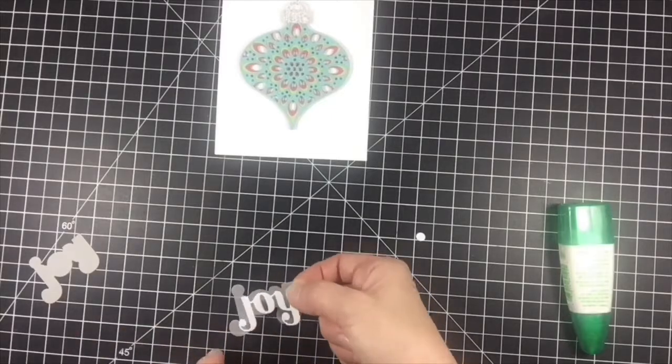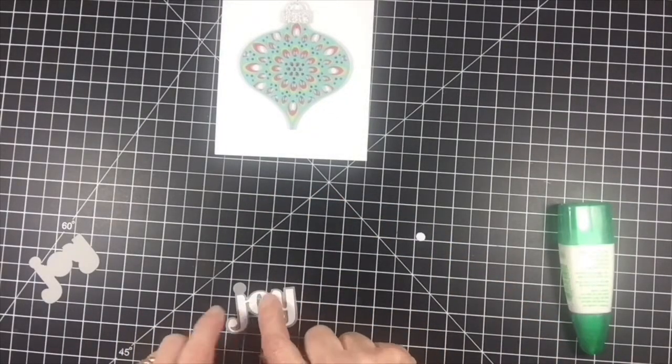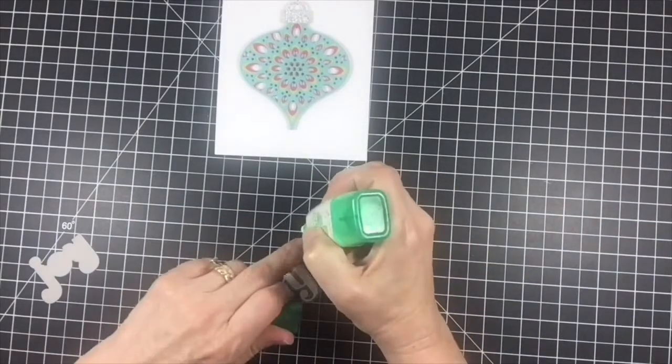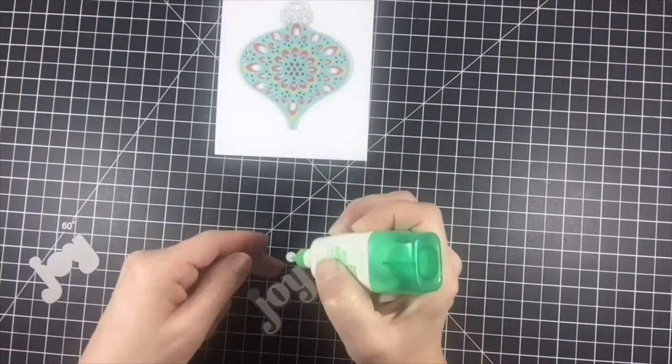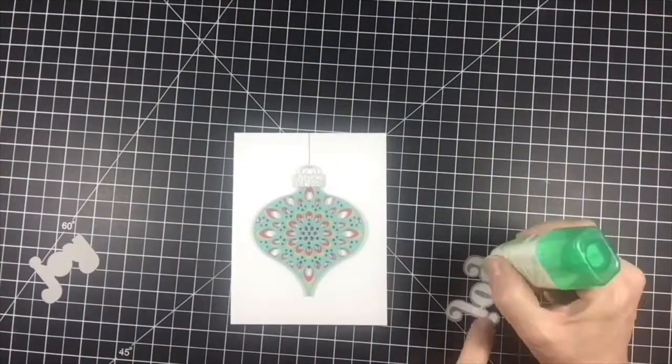I used liquid adhesive one more time to glue the word joy to the word cloud behind it. The last piece to glue on was a dot over the joy. Once again, I used liquid adhesive to glue the completed sentiment to the center of the ornament to finish off the card.